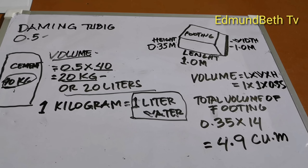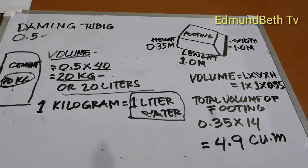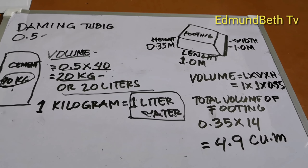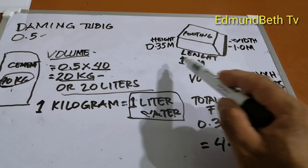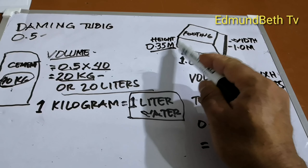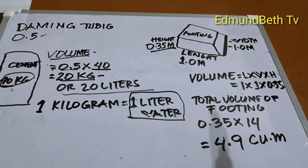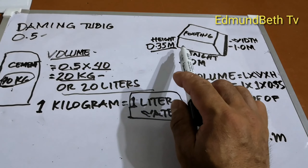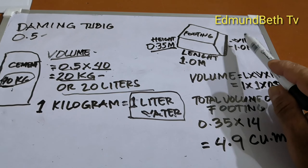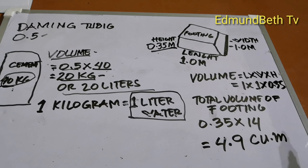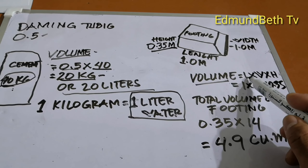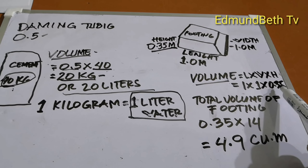Ngayon mga idol, proceed po tayo sa pagkalkula ng ating footing o puting. I-calculate natin kung ilang kubiko po ito. Ang kapal ng puting sa mga bungalow house ay kadalasan 0.35 meter o 35 cm. Ang haba ay 1 meter at lapad ay 1 meter. Volume equals length times width times height, so 1 times 1 times 0.35.